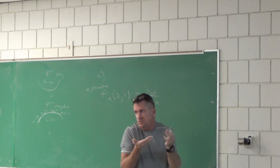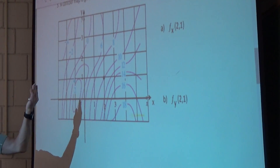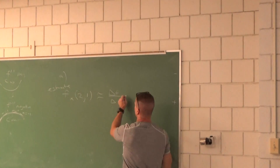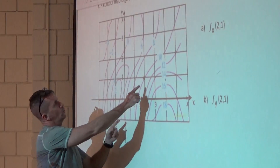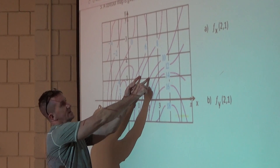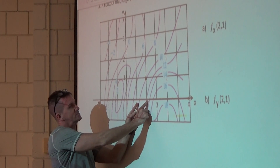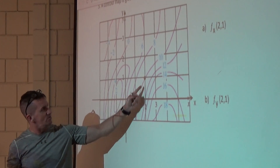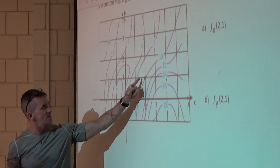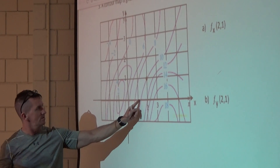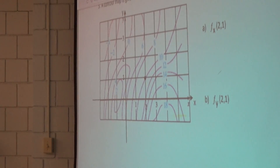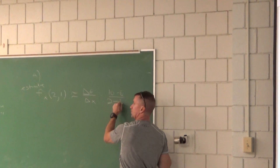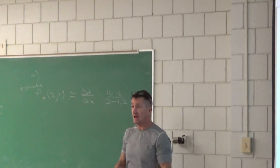At the point (2, 1), I'll use the closest contour values. Think of these as temperatures in Celsius: eight degrees here, ten degrees here, twelve degrees there. I'll use 10 minus 8, where 10 corresponds to about x = 2 and 8 corresponds to about x = 1.2. So that gives 2 over 0.8, which is about 2.5 degrees Celsius per unit increase in x.